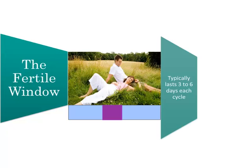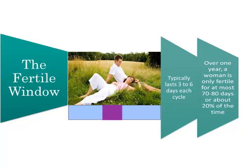This fertile window is determined by a woman's hormones. In healthy women it typically lasts three to six days per cycle. Over the course of one year, a woman is only fertile for at most 70 to 80 days, or about 20% of the time. This raises the question: why do we advise that women use artificial birth control — exposing them to hormonal side effects daily — when they are only fertile for a very short period of time?